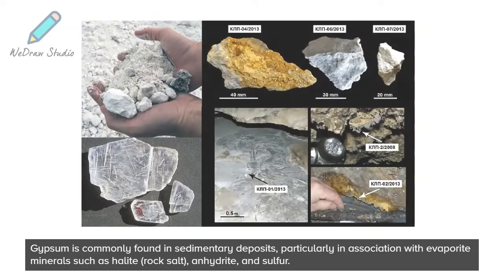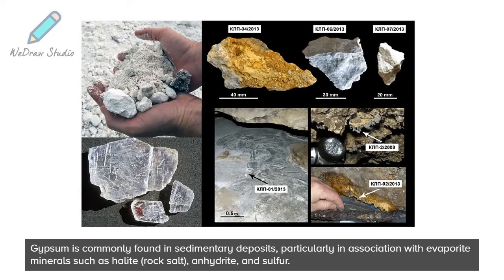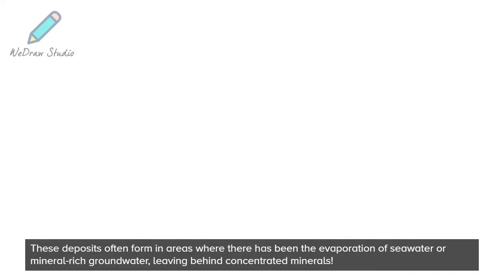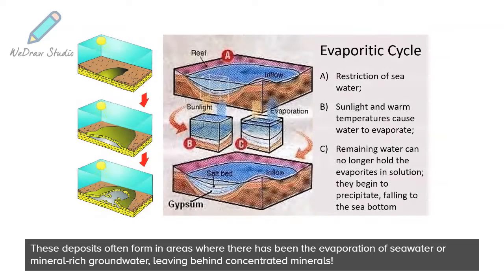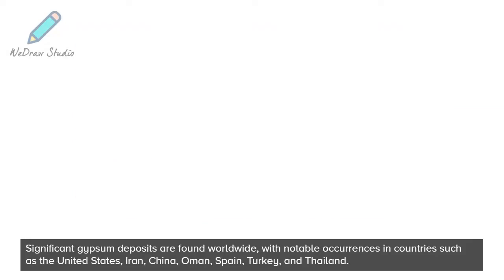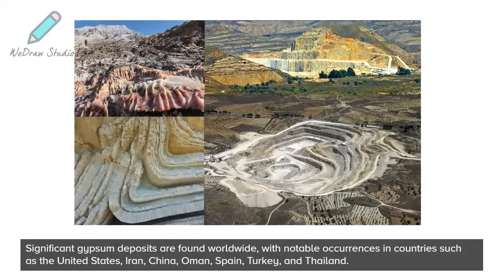Gypsum is commonly found in sedimentary deposits, particularly in association with evaporite minerals such as halite, rock salt, anhydrite, and sulfur. These deposits often form in areas where seawater or mineral-rich groundwater has evaporated, leaving behind concentrated minerals. Significant gypsum deposits are found worldwide, with notable occurrences in countries such as the United States, Iran, China, Oman, Spain, Turkey, and Thailand.